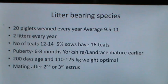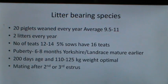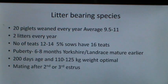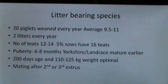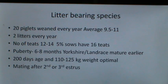Pig is a litter-bearing species and 20 piglets are weaned every year with an average of 9.5 to 11. The pig usually delivers 2 litters every year. Sows have 12 to 14 teats and 5% of sows have 16 teats. Puberty occurs in pigs at 6 to 8 months; the Yorkshire and Landrace breed mature earlier. Puberty occurs at 200 days of age and 110 to 125 kg of weight. Mating is usually carried out at the second or third estrus.